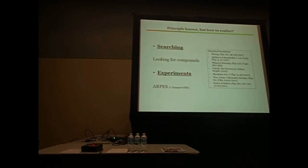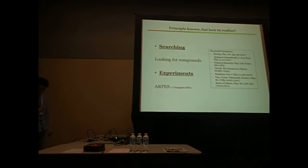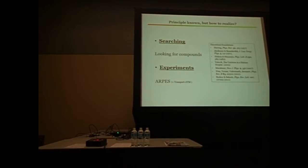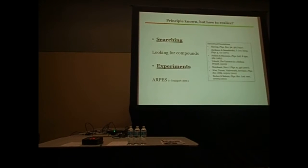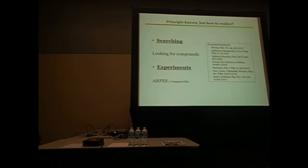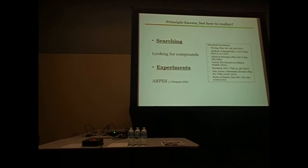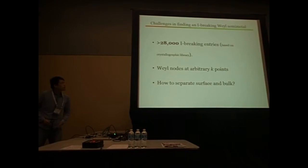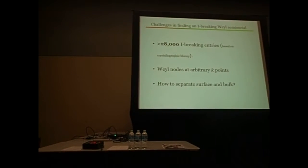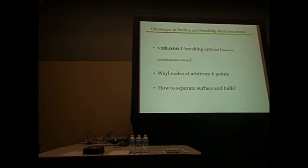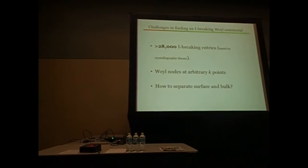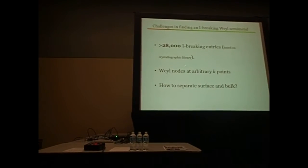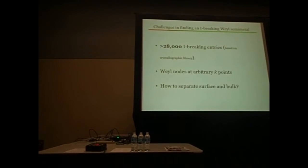Traditionally, ARPES has been viewed as a means of sample characterization. Somebody found something interesting, maybe superconducting or topological, and they take the sample to an ARPES guy and say, 'Hey, this sample is interesting. Can you measure the band structure for me?' But one day I woke up and talked to our colleague. We said, 'Why don't we look for compounds ourselves? Is it hard? Let's try.' We went to the crystallographic library. It turns out you can search. If you're putting in the space inversion symmetry breaking space groups, you can get 28,000 entries.